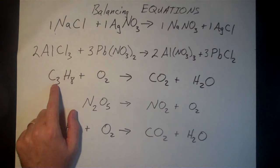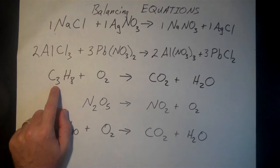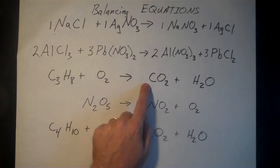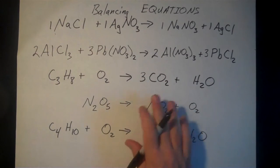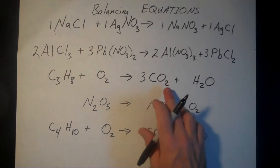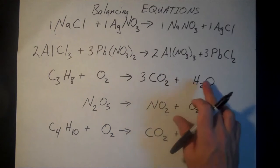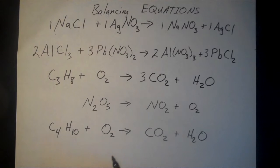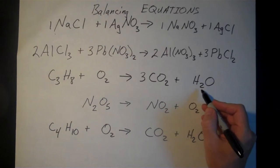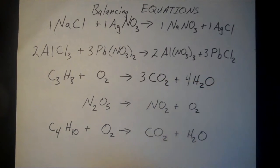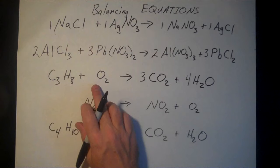Let's try a combustion reaction. This is propane C3H8 reacting with elemental oxygen to make CO2 and H2O. I'll start with the carbon — I've got three carbon atoms on the reactant side, only one on the product side, so let's put a three in front of CO2. I'll hold off on the oxygen and balance that last, since it shows up in more than one place. It's easier to balance elements that only appear once on each side first. I've got eight hydrogens, only two on the product side, so I'll put a four in front of H2O. That balances the hydrogen.